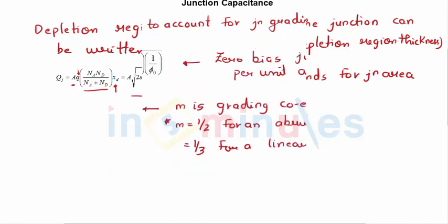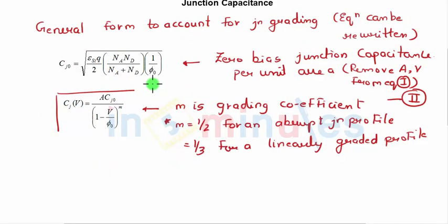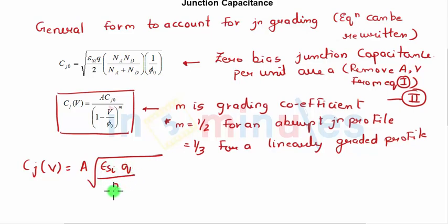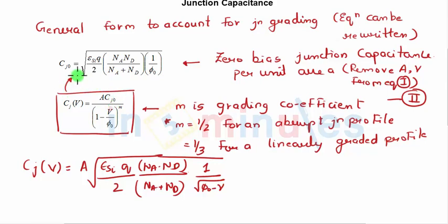Now we'll write equation 1 in a more general format. Our equation 1 currently was CJ(V) = A × epsilon_silicon × Q / [2 × (NA × ND)/(NA + ND)] × 1/sqrt(phi_0 - V). I have written a general term for this: A × CJ0, where CJ0 is the zero-bias junction capacitance per unit area.